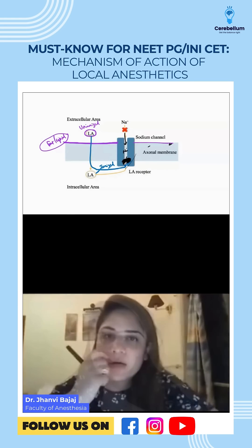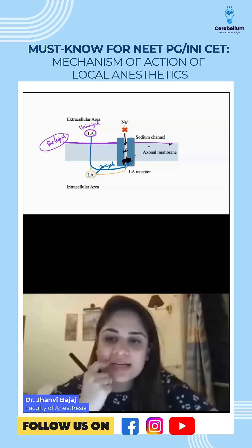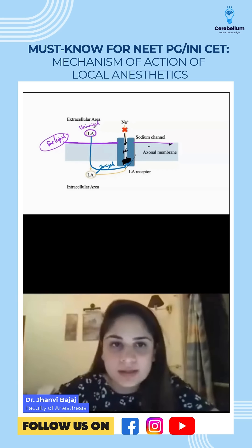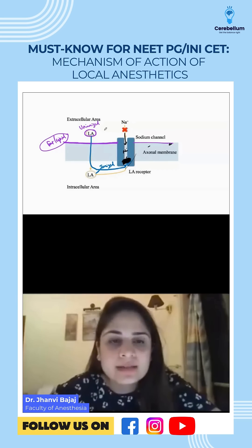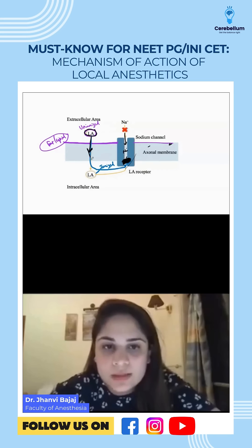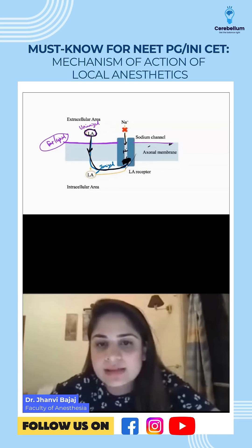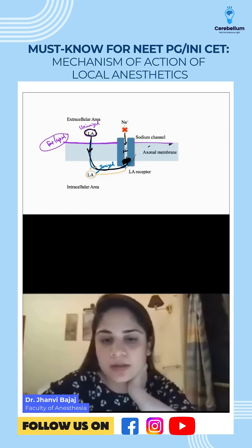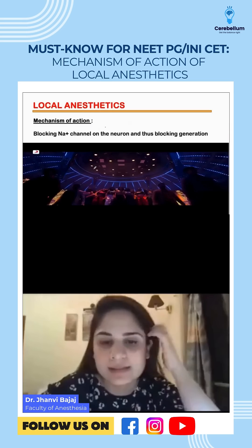So, everyone understood how a local anesthetic acts? It causes sodium channel blocking. Just remember that the local anesthetic is initially in the unionized form to cross the lipid-soluble nerve membrane. Once it enters inside, it gets ionized and then attaches to the sodium channel from inside in the ionized form. This is how local anesthetics act.